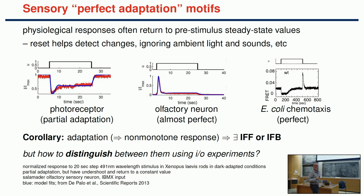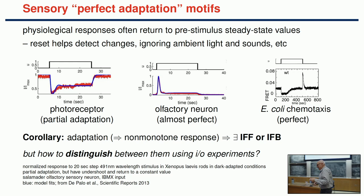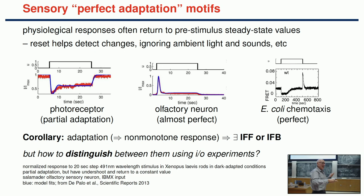Another example is the adaptation problem. We tend to stop paying attention to things after a while—you don't feel your clothes after a while. In biology, a huge number of systems adapt because we want to detect change. When a change happens, you get a signal that peaks and then returns to default. This means the system must have inside it either an incoherent feedforward loop or a negative feedback.